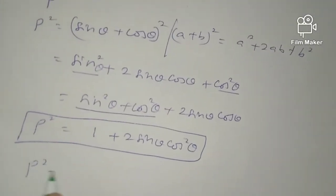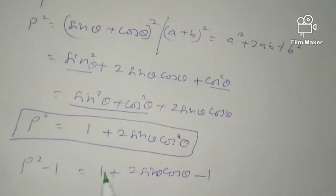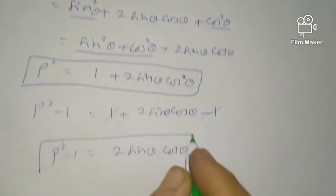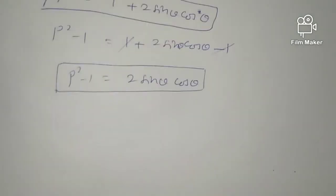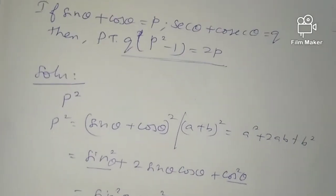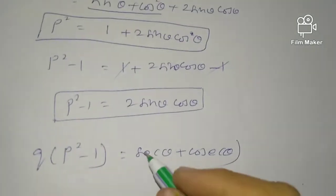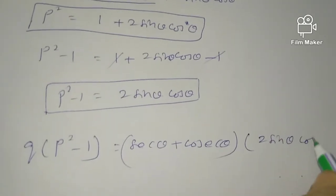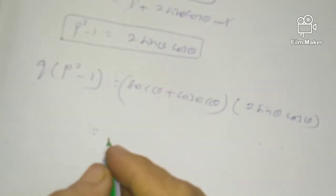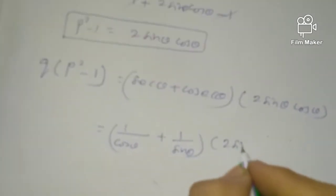Then P squared minus 1 equals 1 plus 2 sin theta cos theta minus 1, which equals 2 sin theta cos theta. Now for Q times P squared minus 1: Q is sec theta plus cosecant theta, which we write as 1 by cos theta plus 1 by sin theta, multiplied by 2 sin theta cos theta.